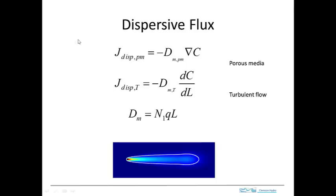We have the advective flux — that's just the concentration times the velocity. Now let's introduce the concept of a dispersive flux. This is a mass flux, and in a porous media the mass flux from dispersion is proportional to the gradient in concentration. This proportionality constant is the dispersivity or dispersion constant. For turbulent flow we have something similar.